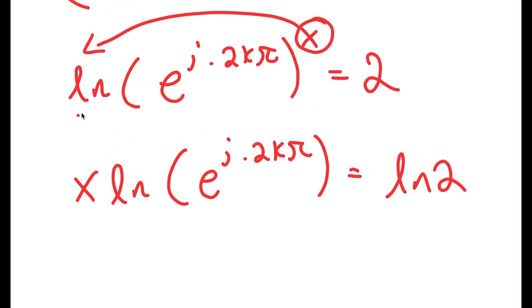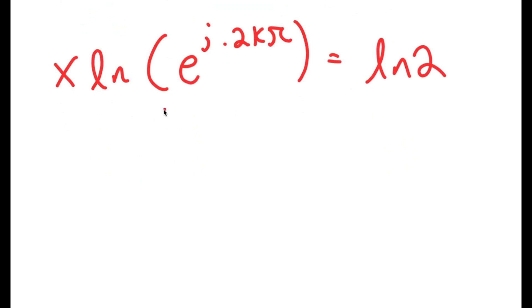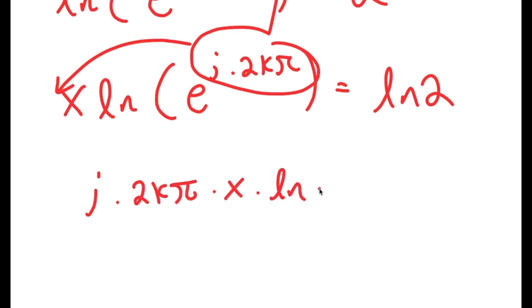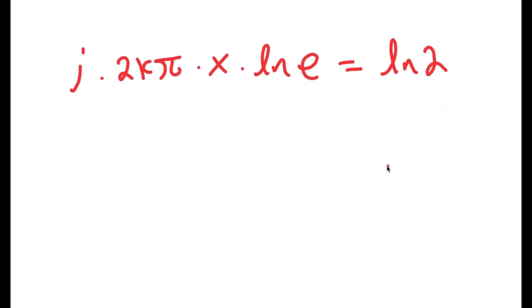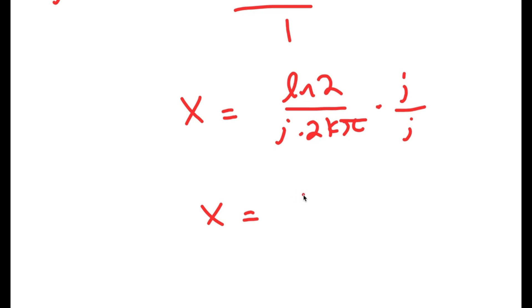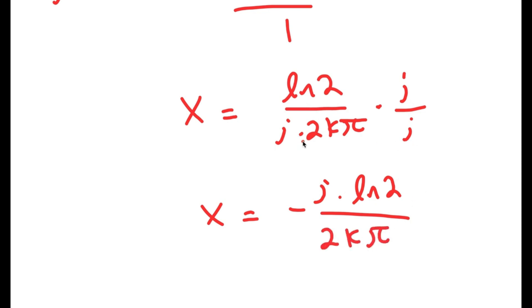Because if you take ln on one side, you have to do the other side. I can also move i·2kπ to the front, so I have i·2kπ·x·ln(e) is equal to ln(2). Since ln(e) is simply equal to 1, I get x is equal to ln(2) over i·2kπ. Now I'm going to multiply this by i over i, so I get x is equal to negative i·ln(2) over 2kπ, because i squared is negative 1. So this is my solution.